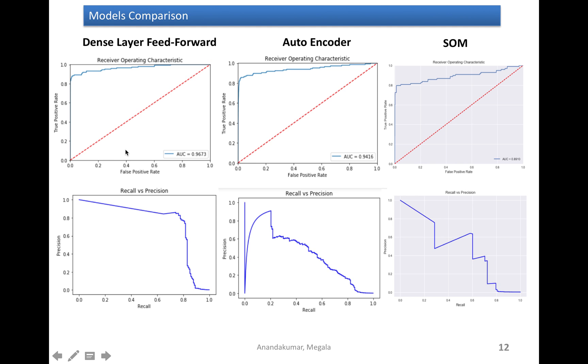And I compared all these three models. And I looked at the AUC value. And AUC value shows that these two models, dense layer feedforward and autoencoder model, these two models are working very well on predicting the fraud transaction. I looked at the AUC value of SOM model, which has the value of 0.89, which is not very bad.